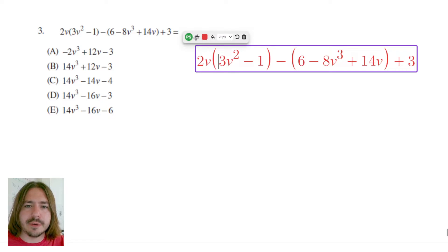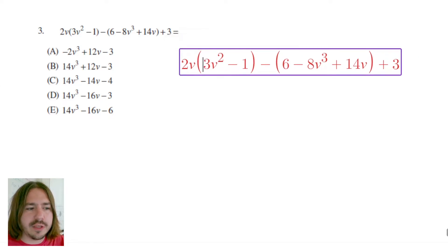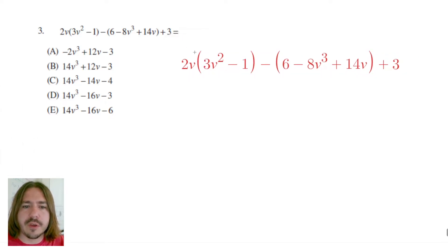So we're going to take this step by step. The first thing you want to do is use the distributive property. We're going to distribute 2v to both 3v squared and negative 1. And by distribute I mean we need to multiply those terms. We're also going to distribute this implied negative 1 here. In other words, we're going to multiply negative 1 by each of the terms in this set of parentheses.